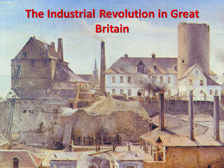By 1787, Edmund Cartwright had invented a water-powered loom, making it possible for weaving to catch up with spinning. It now became more efficient to do the work in factories, which were located near streams and rivers.